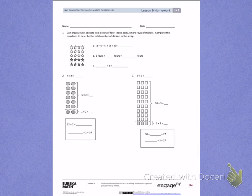This is Module 1, Lesson 9. Today's objective was to find related multiplication facts by adding and subtracting equal groups in array models.